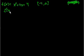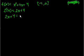f prime of x is equal to 2x plus 4. So when does this equal 0? Let's see, 2x plus 4 is equal to 0. 2x is equal to minus 4. I just almost made a mistake there. x is equal to minus 2.